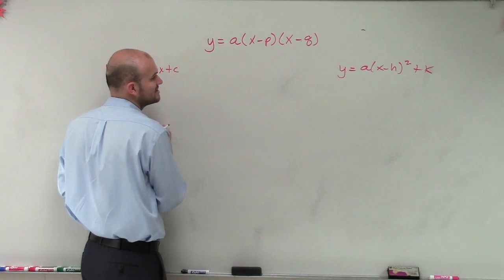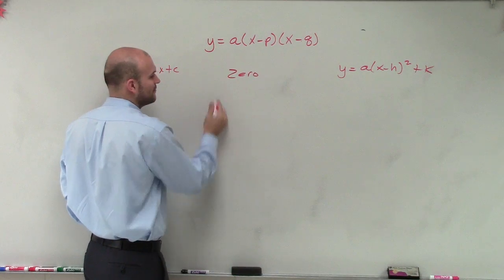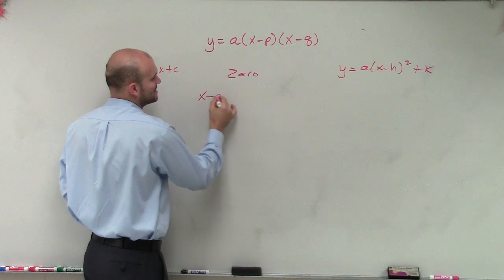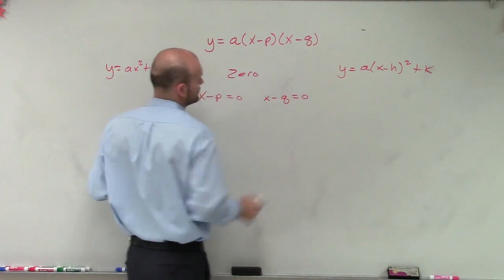The important thing to notice about this, if I want to find the zeros in intercept form, then all I have to do is take each one of my factors, x minus p, set equal to 0, and x minus q, and set that equal to 0.